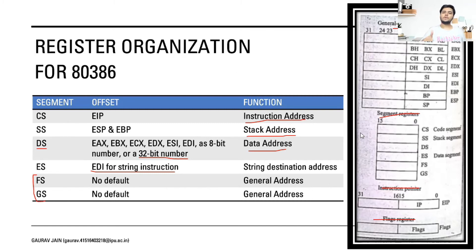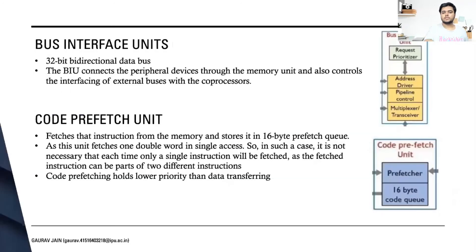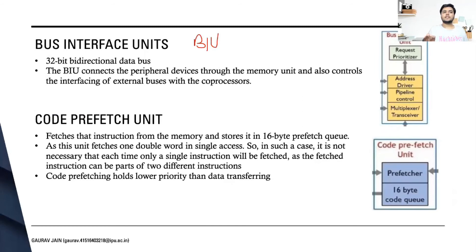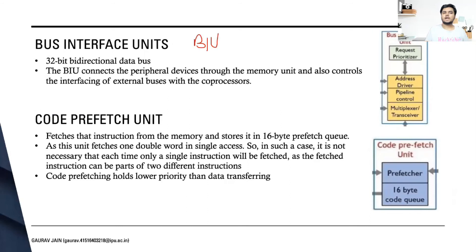Now let's jump back to the architecture and see how each independent unit functions and how they relate to register organization. First, we have the bus interface unit (BIU), which has a 32-bit bidirectional bus. It provides an interface between external buses and coprocessors, and connects peripheral devices and the memory unit. All bus functions are implemented here using the bus interface unit.